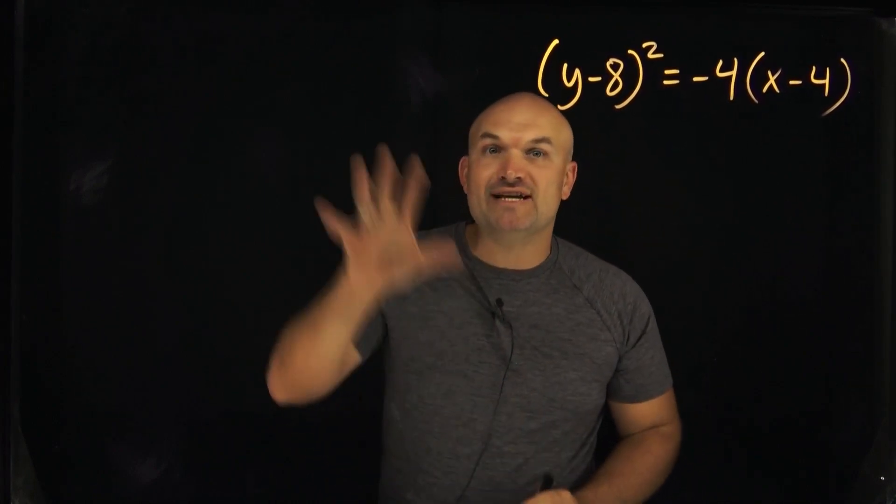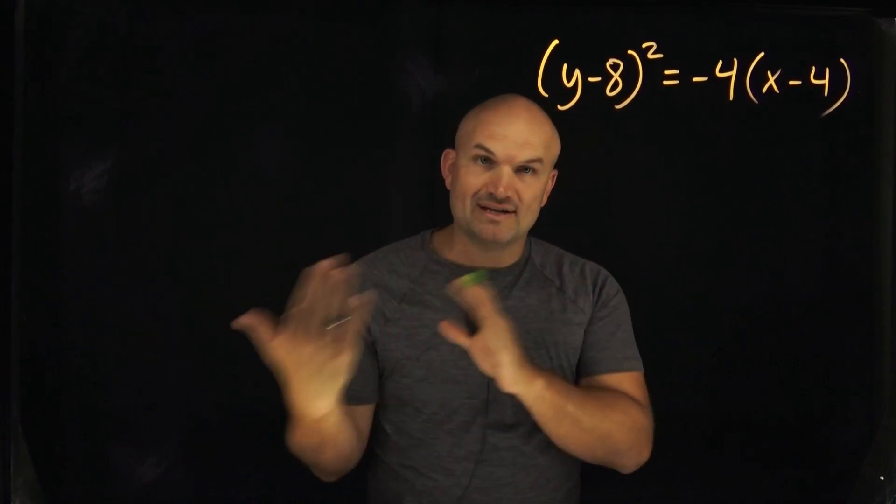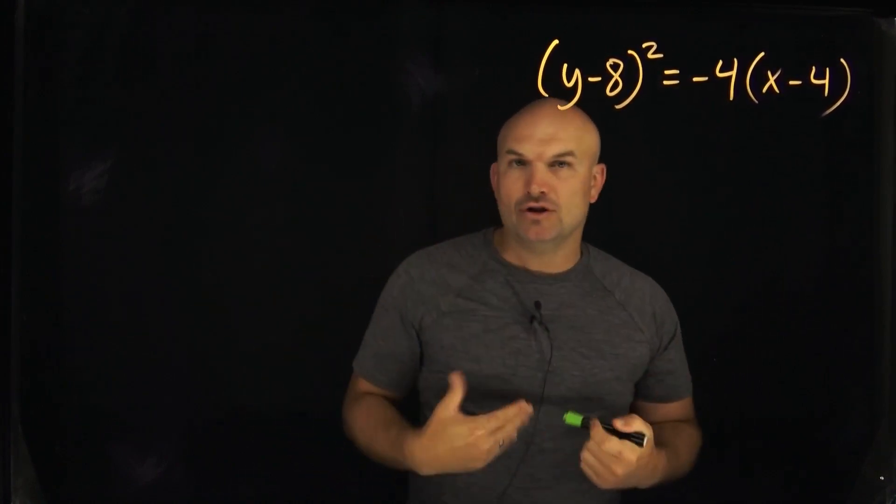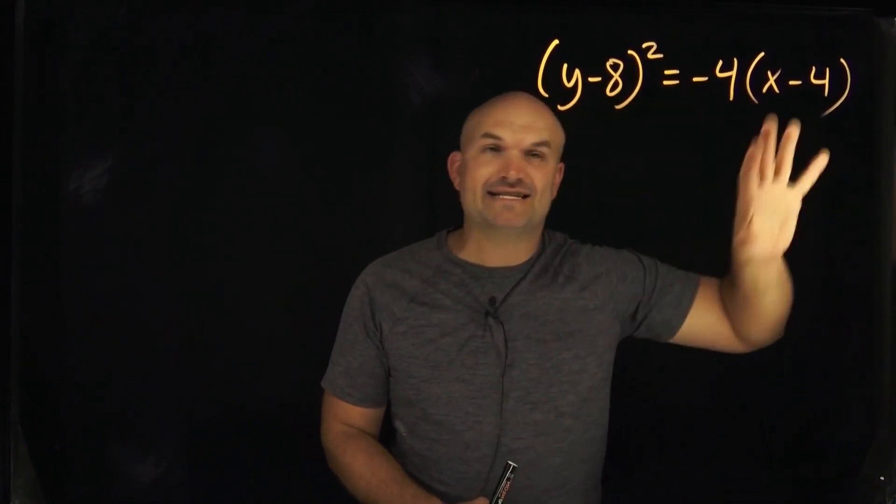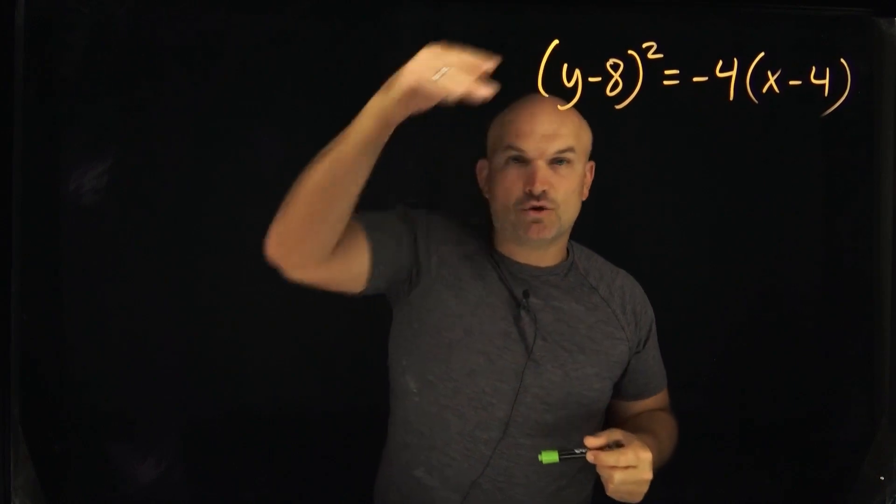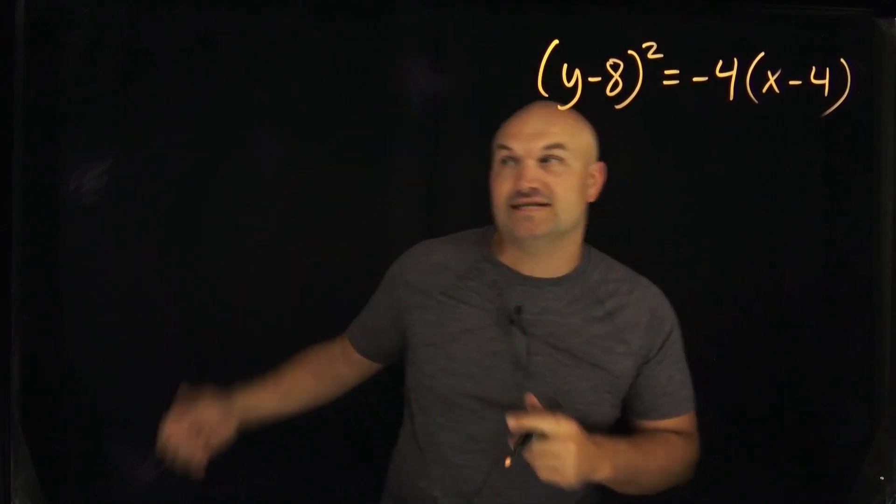So the first thing I still want you to do though is write out what the standard form is. Remember, we have a standard form for a horizontal opening as well as a vertical opening. So how do I know what the opening is for this equation just as it's written? That all comes into what is squared. So notice that the y is squared, so therefore the standard equation is going to look like this.